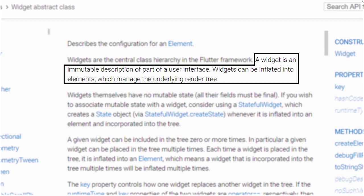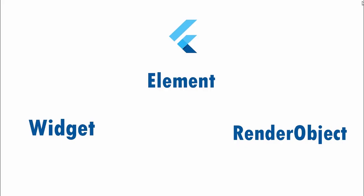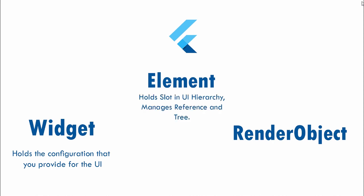When you go deep into the documentation, you can find out that there are basically three components that Flutter depends upon, and those are the widget, the element, and the render object. A widget is something that holds the configuration that you provide for the UI. For example, in a padding widget, you provide the padding and the child element that the padding has to hold. An element in Flutter is something that holds the position in the UI tree. It manages the life cycle and the parent-child relationship between itself and the other elements. A render object, on the other hand, knows about the layout and it paints the user interface.